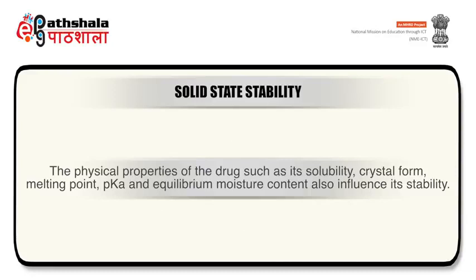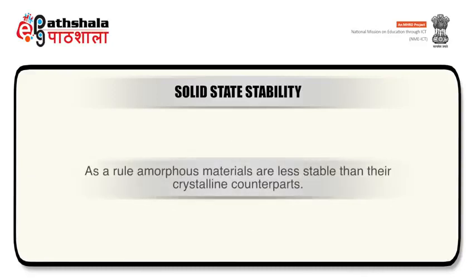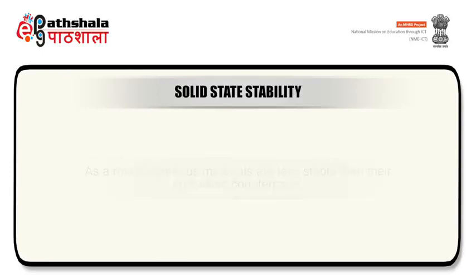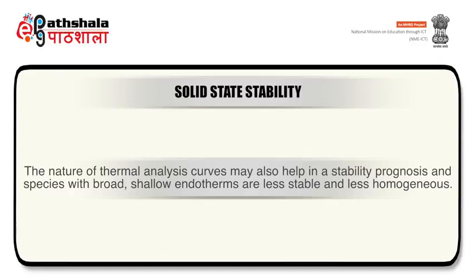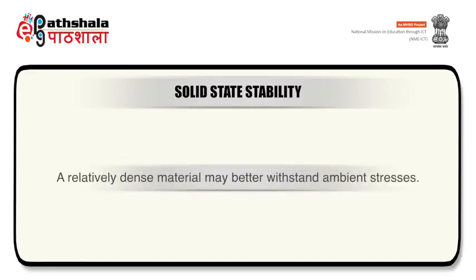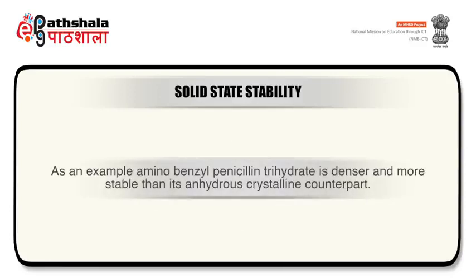As a rule, amorphous materials are less stable than their crystalline counterparts. The nature of thermal analysis curves may also help in stability prognosis; species with broad, shallow endotherms are less stable and less homogeneous. A relatively dense material may better withstand ambient stresses. As an example, aminobenzyl penicillin trihydrate is denser and more stable than its anhydrous crystalline counterpart.